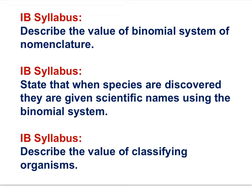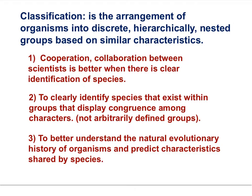Here are three relevant IB syllabus statements: describe the value of the binomial system of nomenclature; state that when species are discovered they are given scientific names using the binomial system; and describe the value of classifying organisms. The value of classifying species has three points. Classification has value in cooperation — collaboration between scientists is better when there is clear identification of species — and to clearly identify species that exist within groups displaying congruence among characters.